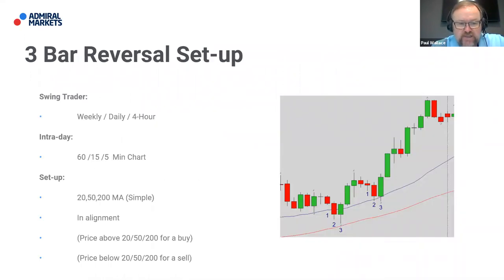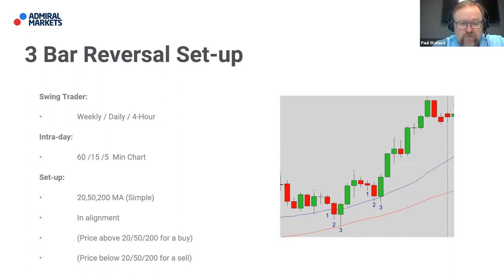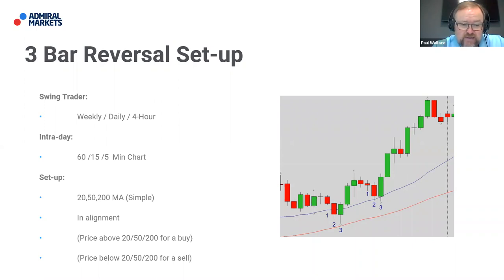As a swing trader, you can trade this on the weekly, the daily, the four hourly — it will actually set up on the monthly charts too, but you might only get one or two trades a year. If you're an intraday trader, you will see these setups on 60, 50 and five minute charts, and also on one minute charts, though things happen quite swiftly there. Unless you're a very experienced trader, I'd suggest 60 to 5 minute charts for intraday. We use a very standard simple setup.